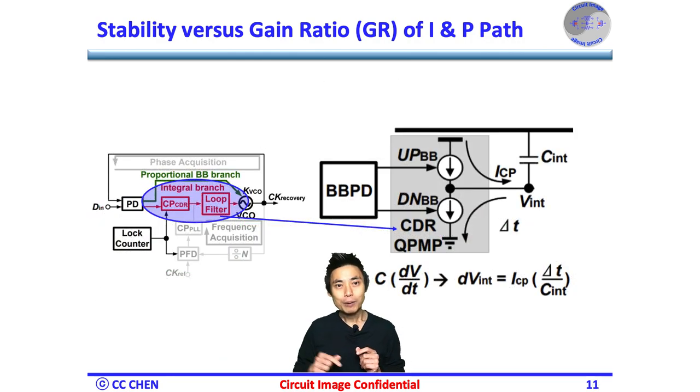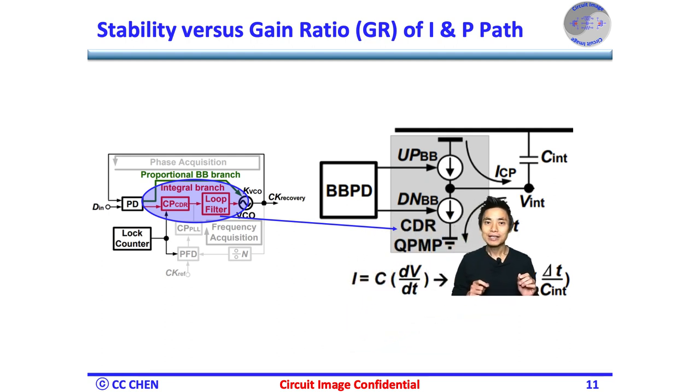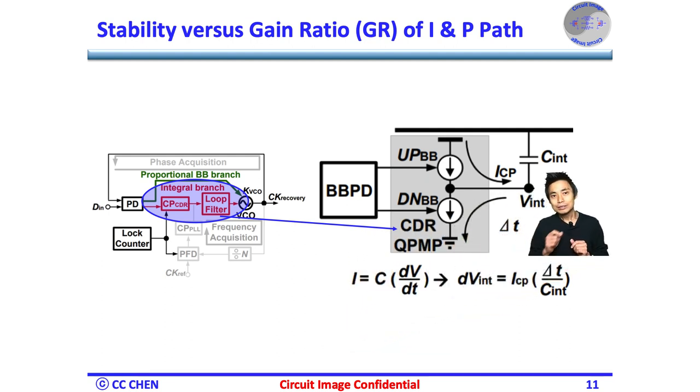Bingo! The charge pump current and the integral capacitor set the integral gain and the gain ratio relative to the proportional gain. Therefore, it's very clear we could make less current and so the less integral gain would be.